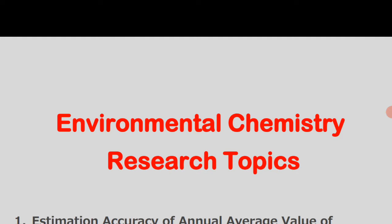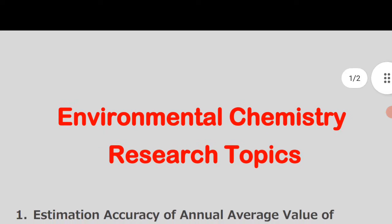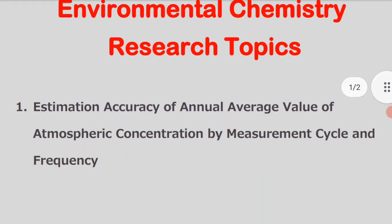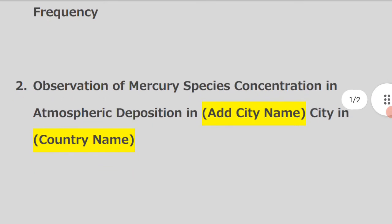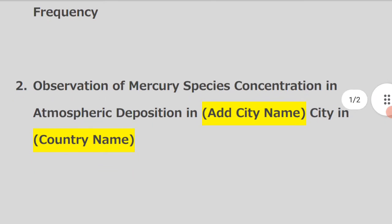I collected a few topics — let's check them. The first one is: estimation accuracy of annual average value of atmospheric concentration by measurement cycle and frequency. The next one is: observation of mercury species concentration in atmospheric deposition.